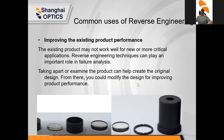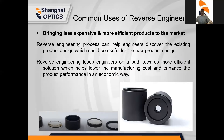Number four: improving existing product performance. The existing product may not work well for new or more critical applications. Reverse engineering techniques can play an important role in failure analysis — taking apart or examining the product helps recreate the original design, from which you can modify it for improved performance. Number five: bringing less expensive or more efficient products to market. Reverse engineering helps engineers discover existing product designs useful for new designs, leading towards more efficient solutions that lower manufacturing costs and enhance product performance in a more economical way.